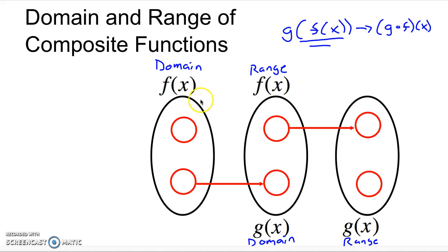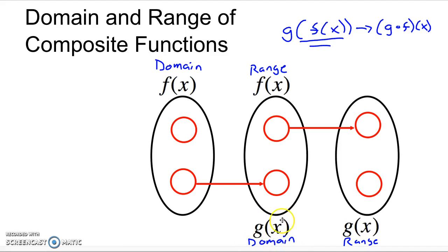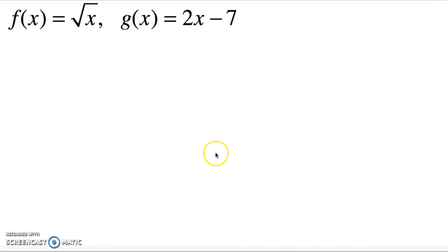To refresh our memory, I've got a picture on the screen showing what I always have in mind when thinking about domain and range of composite functions. In g of f of x, f of x is the inside function that gets everything first. I have to be careful about what I feed it, and also about the range of that inside function, because that range becomes the domain of the outside function. I must ensure no elements in the range of the first function cause a problem for the second.